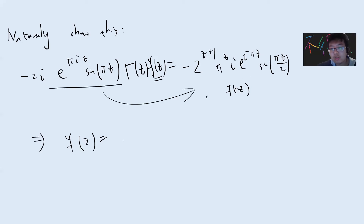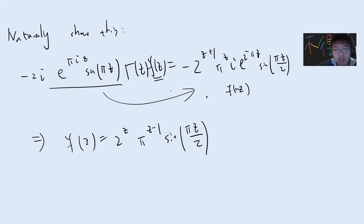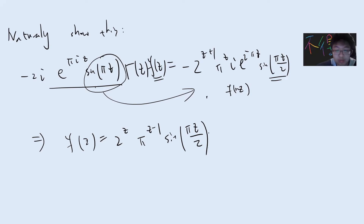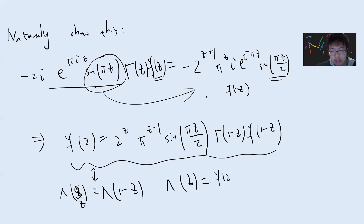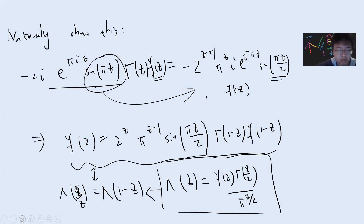Dividing everything to the right side — the calculation is tedious — you use the identity sin(πz) = 2·sin(πz/2)·cos(πz/2), and after substitution you can prove that λ(z) = λ(1-z), where λ(z) = ζ(z)·Γ(z/2) / π^(z/2). This is the standard functional equation of the zeta function, proved via the contour approach.